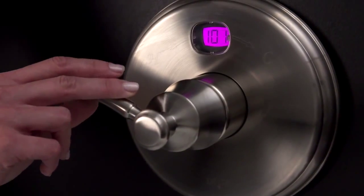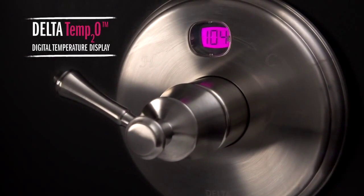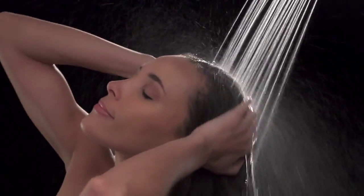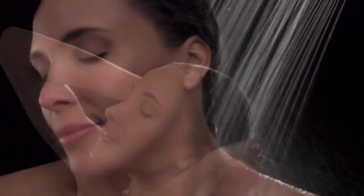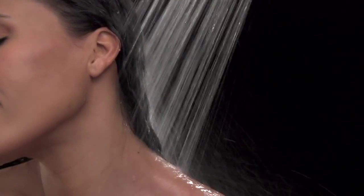Take the guesswork out before you get in with the Delta Temp2O Tub & Shower. The Temp2O Digital Temperature Display shows the temperature of the water flowing from your shower head or tub spout.